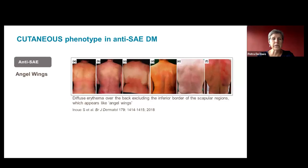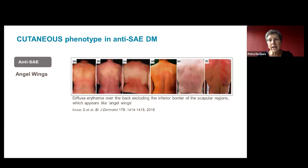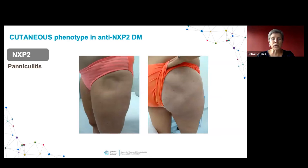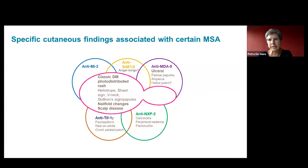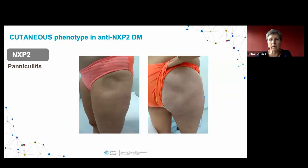For anti-SAE patients, a so-called angel wings sign has been published — a whitish wing-like zone — though we have not yet seen it, possibly because our anti-SAE cohort is small; it appears more in Asian populations. In anti-NXP2, calcinosis is seen more frequently, which is consistent with anti-NXP2 being found in juvenile dermatomyositis together with TIF-1 gamma. Some NXP2 patients start with peripheral edema of the feet or hands. Panniculitis is also described more frequently in the NXP2 subgroup.